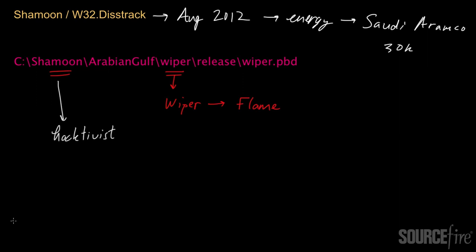You can break Shamoon up into its different components and talk about its different activities. One of the first things Shamoon did was drop itself onto a system — the initial phase of infection. In the case of Shamoon, it appears to have been initially dropped into an environment via a USB stick, planted there by an insider in the organization who caused the initial machine to get infected.